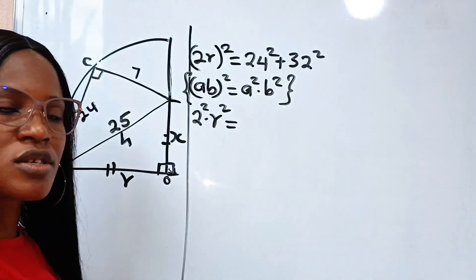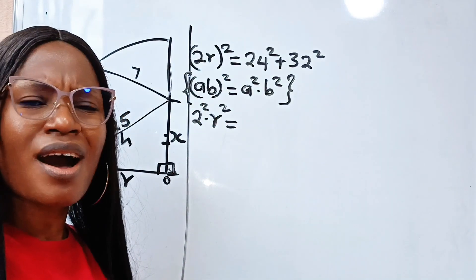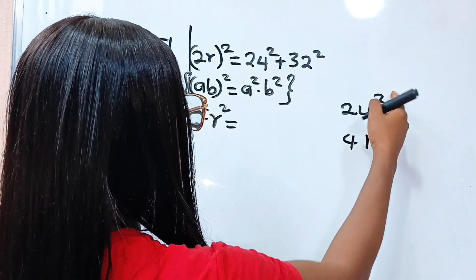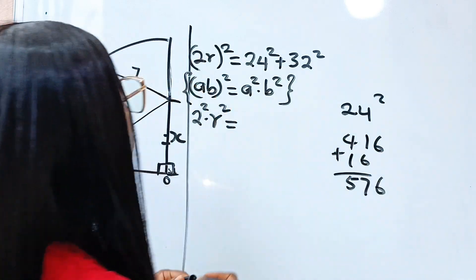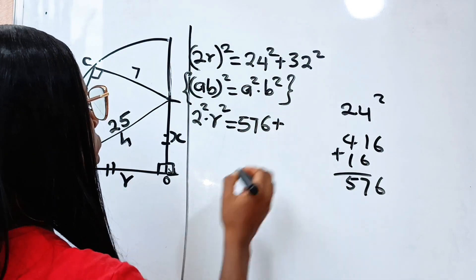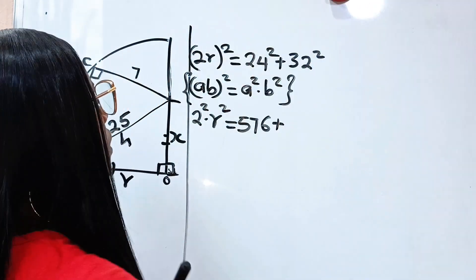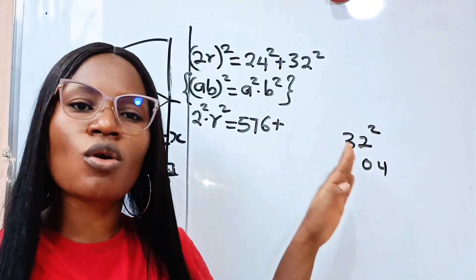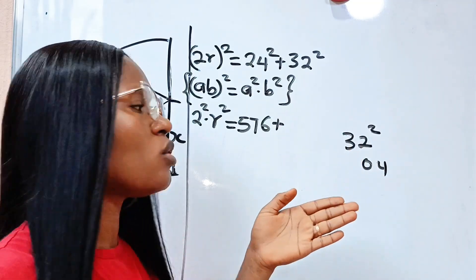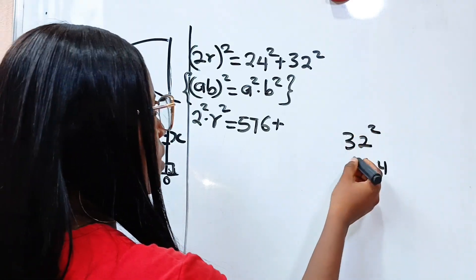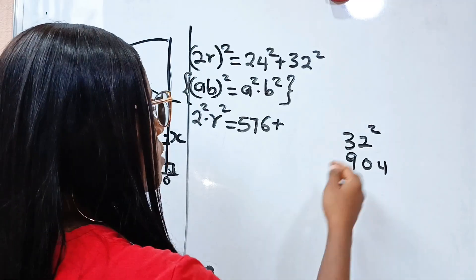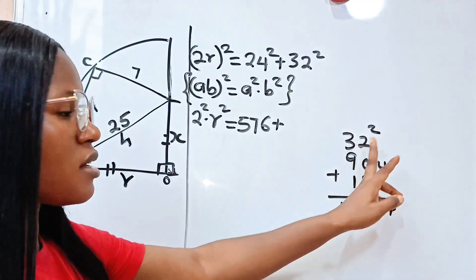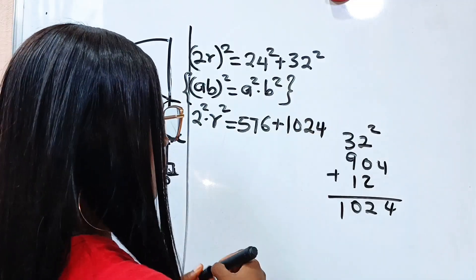Now 24 squared is 576, and 32 squared: 2 squared is 04, 3 squared is 9, and 3 times 2 times 2 gives 12, so 32 squared equals 1024. Therefore 4R² equals 576 plus 1024 equals 1600.